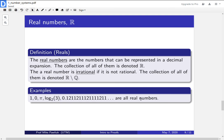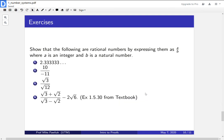So here are some exercises for you. So show that all of these are rational numbers by expressing them as an integer over a natural number. So 2.333 repeating, 10 over root 11, root 3 over root 12, and this complicated fraction, which is an example from the textbook.